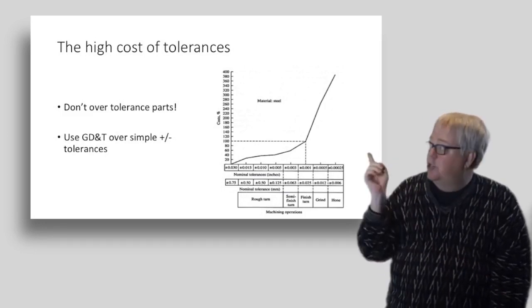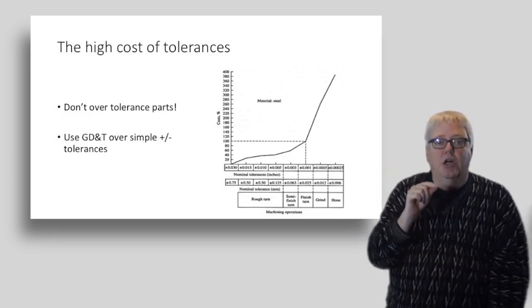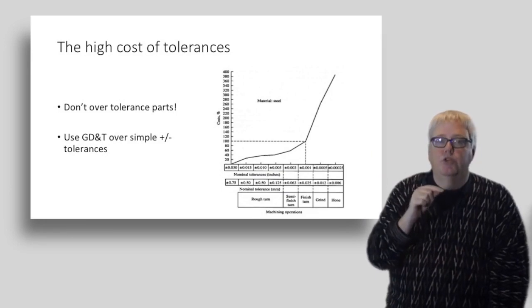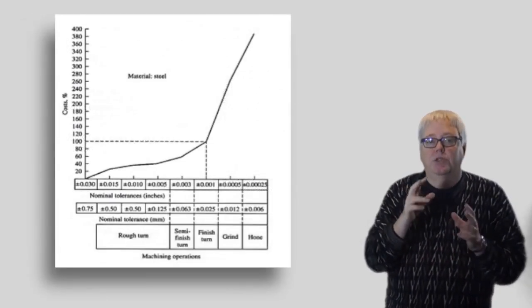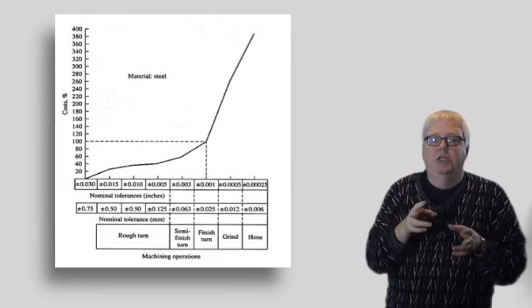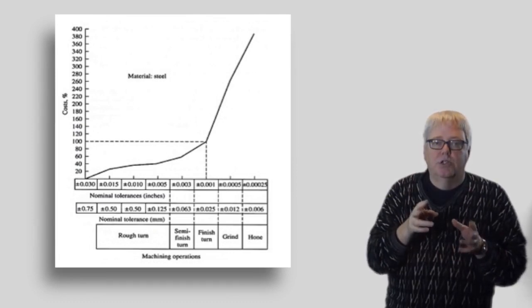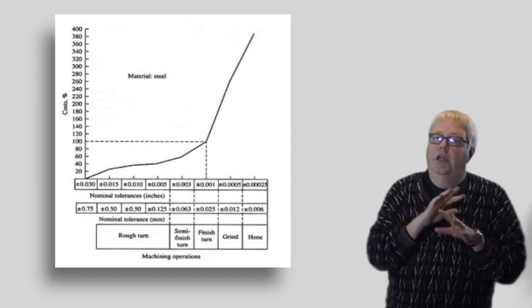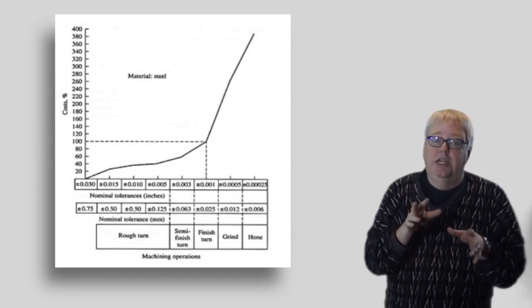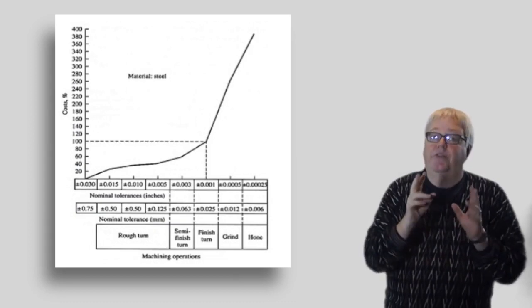GD&T, that's Geometric Dimensioning and Tolerancing, is a much better tool for expressing tolerances than simple plus minus tolerancing. GD&T will give more relaxed tolerances while still giving you the specs your parts function requires. If your shop isn't all over GD&T, you should be developing that skill.